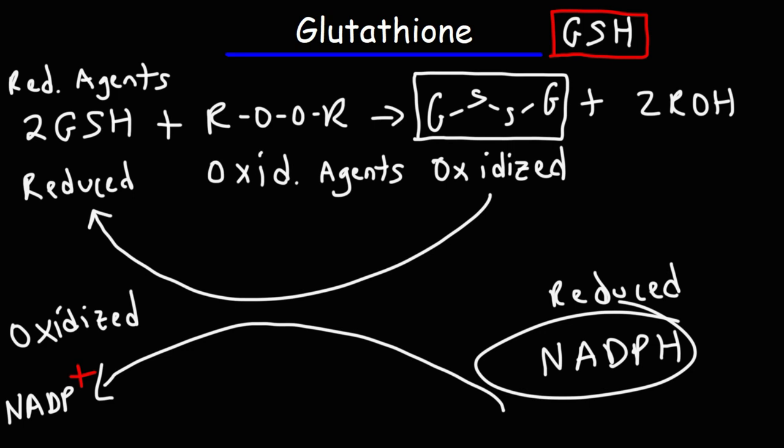Another role that glutathione plays in is in the detoxification of xenobiotics. Xenobiotics are basically substances that are foreign in a body that shouldn't be there. This could be certain pharmaceutical medications, this could be pesticides. But glutathione does play a role in the detoxification of these xenobiotics.